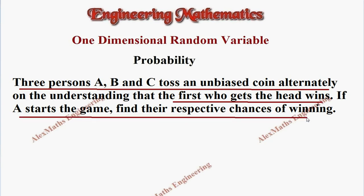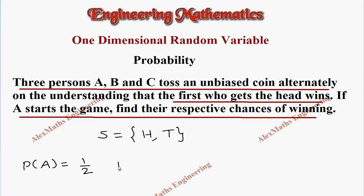So when we toss a coin, the sample space is head and tail. So when A wins, that is A getting head is 1 by 2. Even B getting head is also 1 by 2, because getting head from a single toss of a coin is 1 by 2. And C getting a head is also 1 by 2.